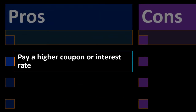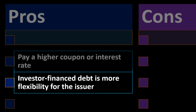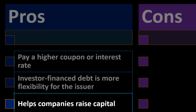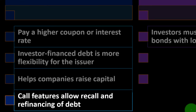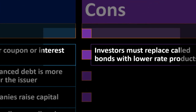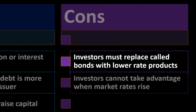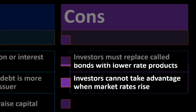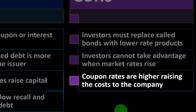Pros: pay a higher coupon or interest rate to the investor; financing debt offers more flexibility for the issuer; helps companies raise capital; call features allow recall and refinancing of debt. Cons: investors must replace called bonds with lower-rate products; investors cannot take advantage when market rates rise; higher coupon rates raise the cost to the company.